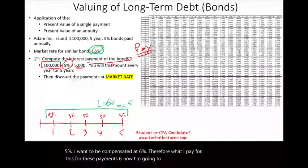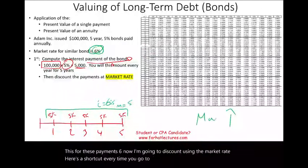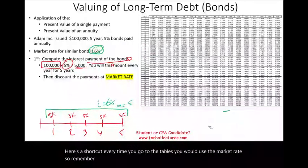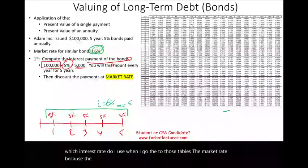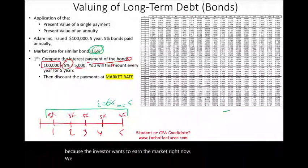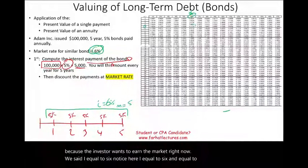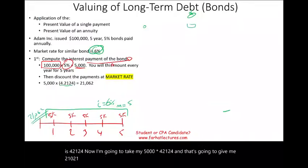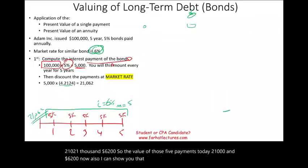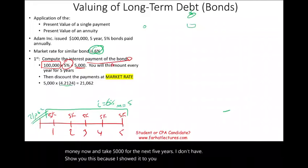Taking $5,000 multiplied by the annuity factor of 4.2124 gives us $21,062. So the present value of those five payments today is $21,062. This represents the annuity component — the first part of the bond's value. You could invest $21,062 today and receive $5,000 per year for five years at 6%, which is exactly what this present value annuity calculation means.